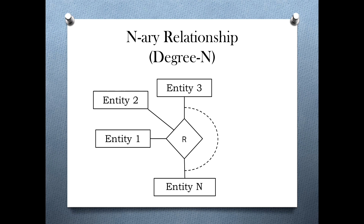Hence theoretically, the relationship between N entity sets can be termed as an N-ary relationship. A diagrammatic representation of an N-ary relationship set is shown on the screen. It should be noted that in ER diagrams, relationships up to degree 3, i.e., ternary relationships, are mostly in use. Hope you have understood the topic. In the next video, we will discuss about the mapping cardinality of a relationship. Thank you.